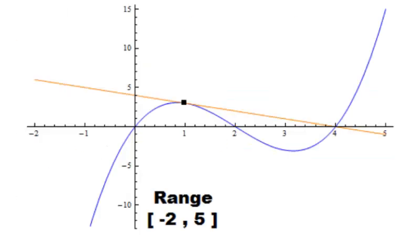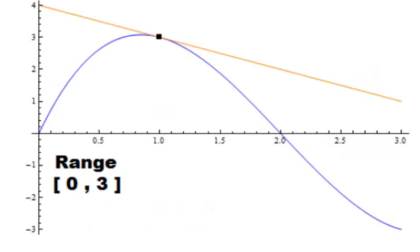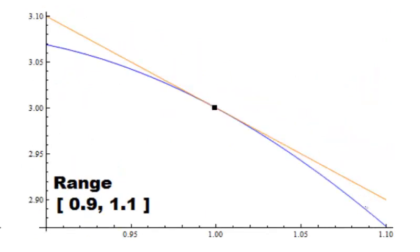Suppose we found the tangent line to a curve at 1. As we increase our magnification, we see that for x values very near 1, the tangent line and the curve are very close.